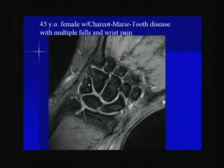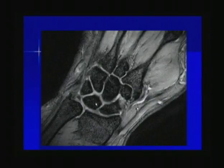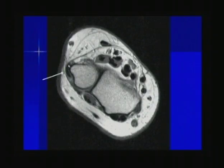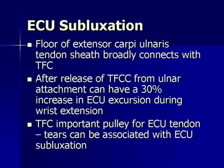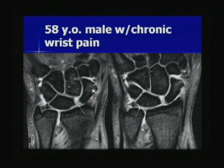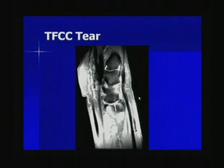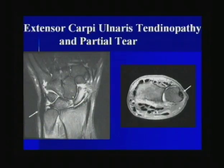In a 45-year-old female with multiple falls and wrist pain, there is a large central TFCC tear, and on axial images the extensor carpi ulnaris tendon is subluxed from its normal position. ECU subluxation is associated with TFCC tears — the floor of the tendon broadly connects with the TFC, and there is a 30% increase in ECU excursion after release of the TFCC from the ulnar attachment site. In another case, a 50-year-old male with a large TFCC tear and scapholunate ligament tear also shows the ECU tendon as markedly thickened on T2-weighted images with central signal on axial images, consistent with a partial tear — so TFCC tears are associated not only with ECU subluxation but also ECU tendon tears.